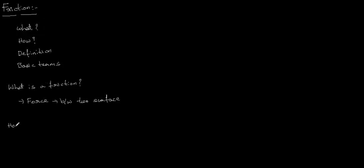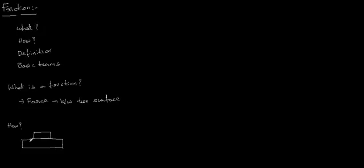Next we need to know how friction takes place between two surfaces — why the force takes place between two surfaces when one surface is in motion over another. Whenever you consider any body in the universe, no body has a perfectly smooth surface finish. No manufacturing process can give a 100% smooth surface finish.